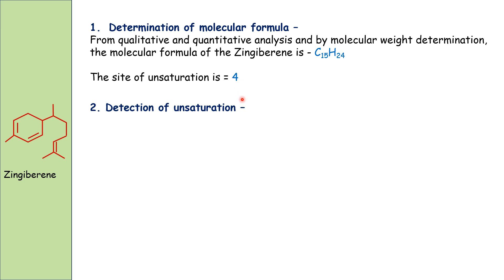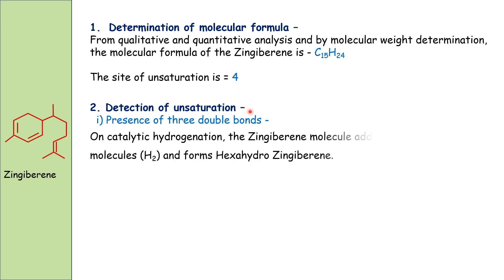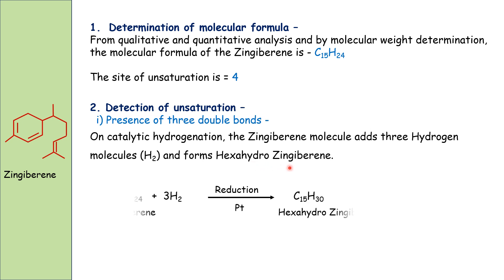Detection of unsaturation: upon catalytic hydrogenation, the gingivirine molecule adds three hydrogen molecules and forms hexahydrogingivirine, indicating the presence of three double bonds.